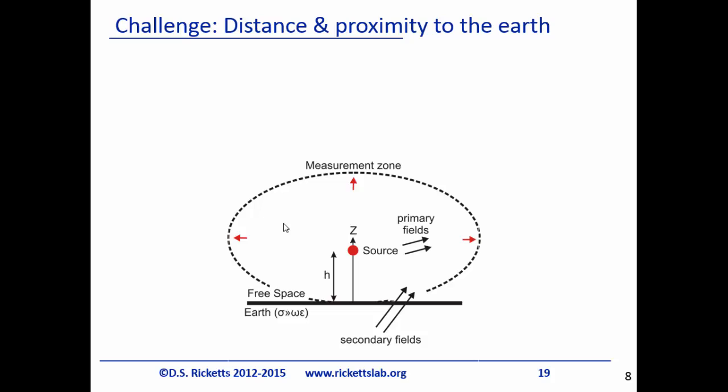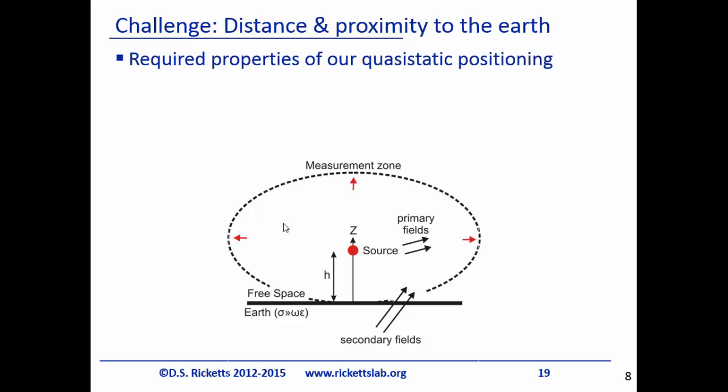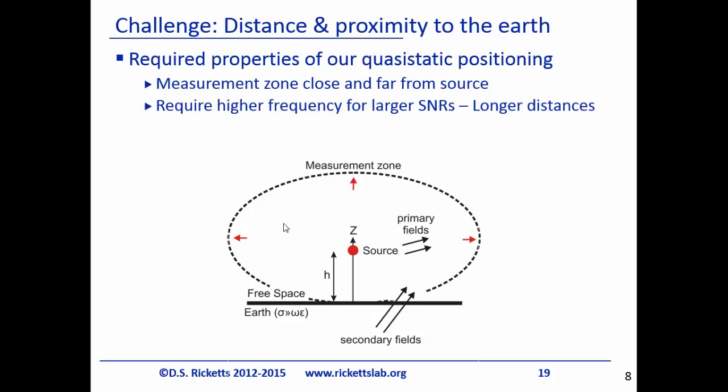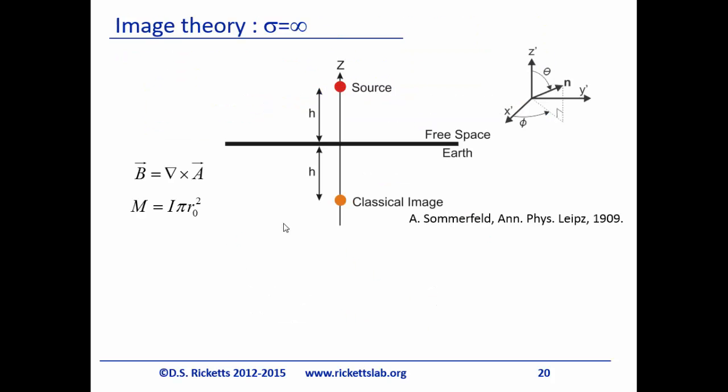To reach 50 meters, we need a strong enough signal, but a strong signal also produces these secondary fields from the earth that we have to account for. We need to measure both close and far. As we turn up frequency to increase voltage, the contribution from these secondary fields becomes bigger — it's a trade-off. We need a way to compensate for these secondary fields, and the approach is something called complex image theory.